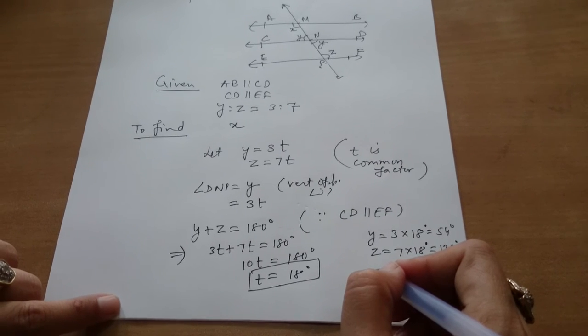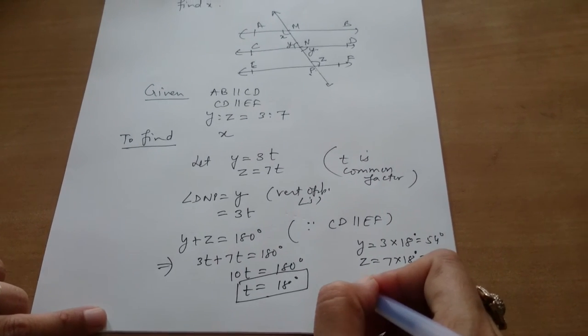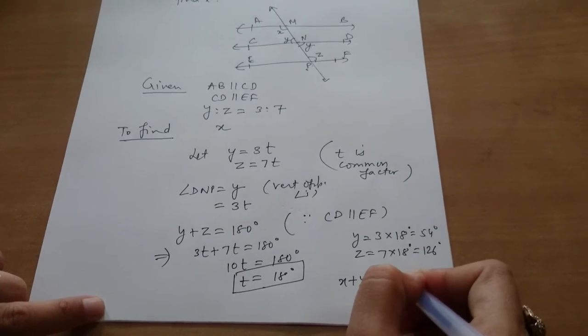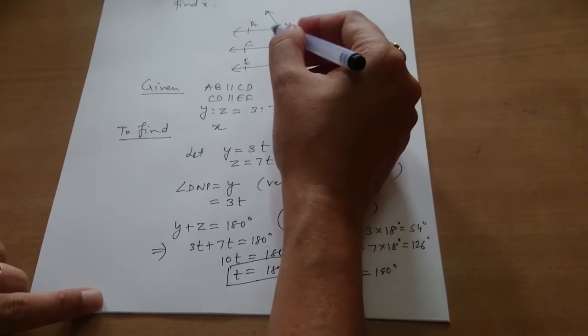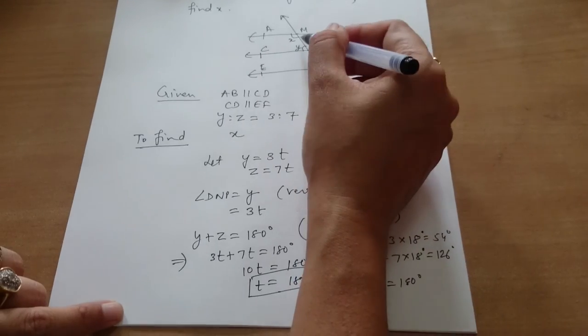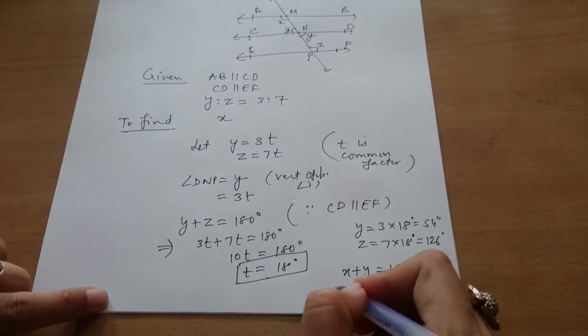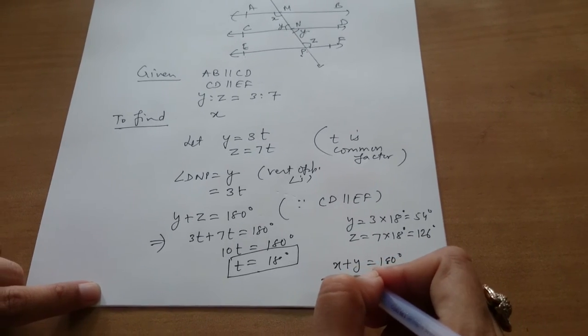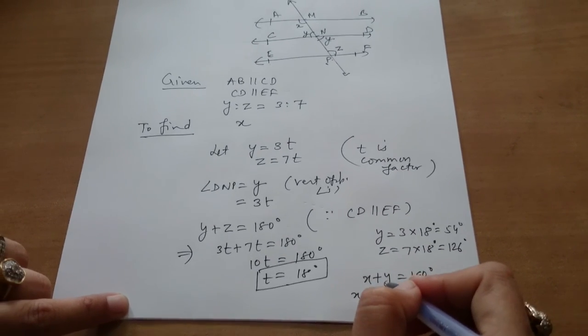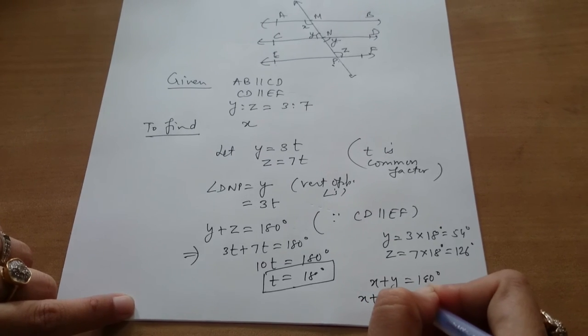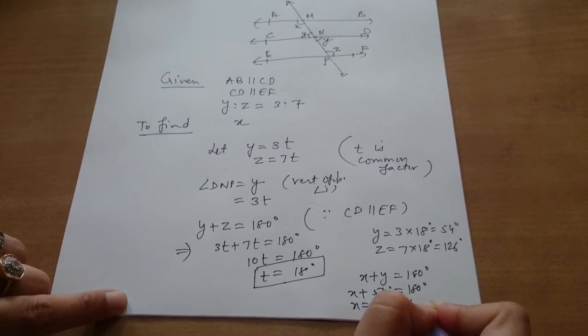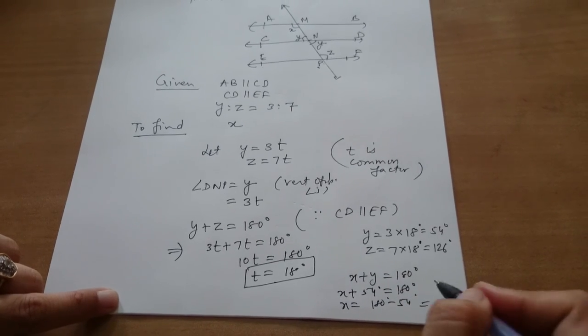Now we have to find the value of X. X plus Y equals 180 degrees because AB is parallel to CD and these are co-interior angles. So X plus 54 equals 180. X will be 180 minus 54, that is 126 degrees.